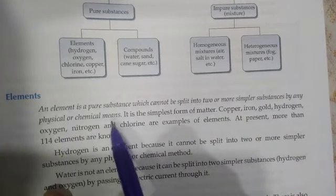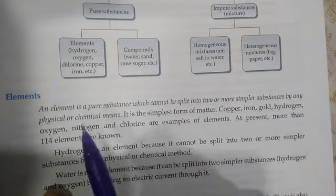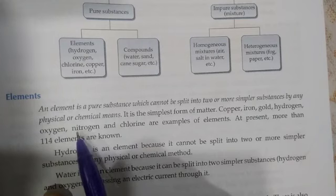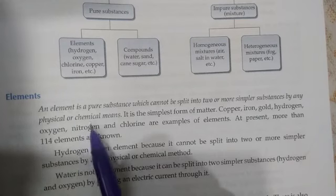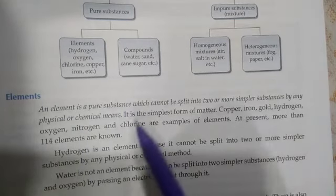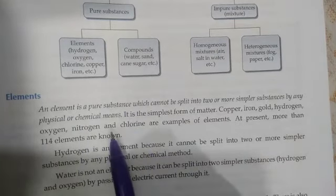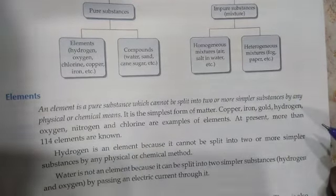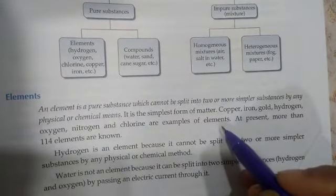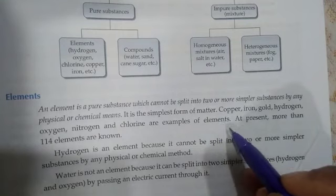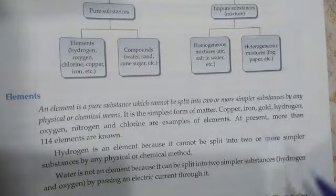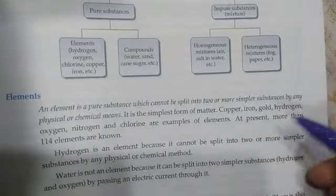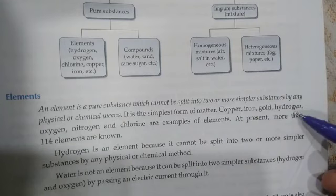An element is the simplest form of matter. Copper, iron, gold, hydrogen, oxygen, nitrogen, and chlorine are examples of elements.